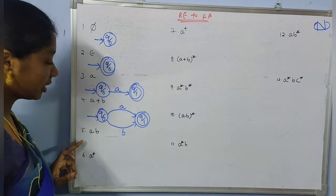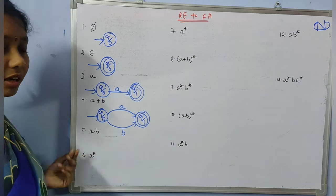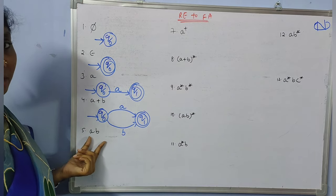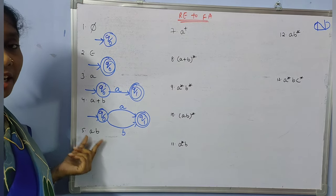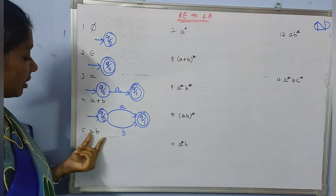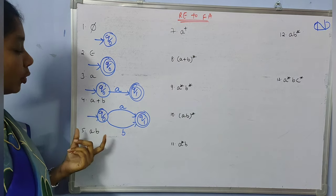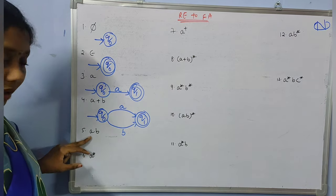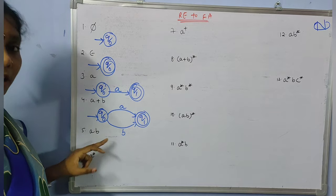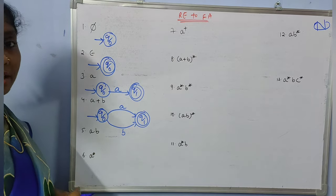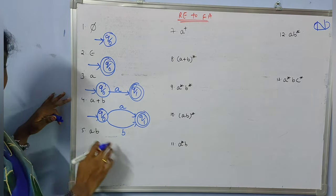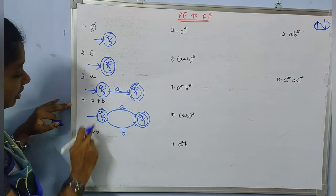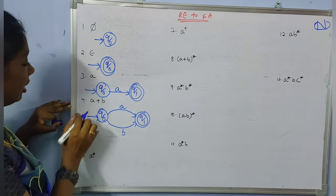Coming to the fifth regular expression, the expression is 'ab'. 'ab' indicates concatenation. For this, to reach the final state you must first have 'a' and after that 'b'. So we should have both 'a' and 'b', whereas in example four we can have either 'a' or 'b' — that is the difference. Observe the difference carefully.